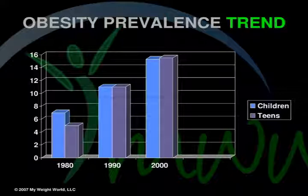Obesity prevalence trends: Looking at obesity trends in children and teens, this graph shows that between 1980 and the year 2000, obesity rates rose from 4–6% in 1980 to nearly 16% in the year 2000.